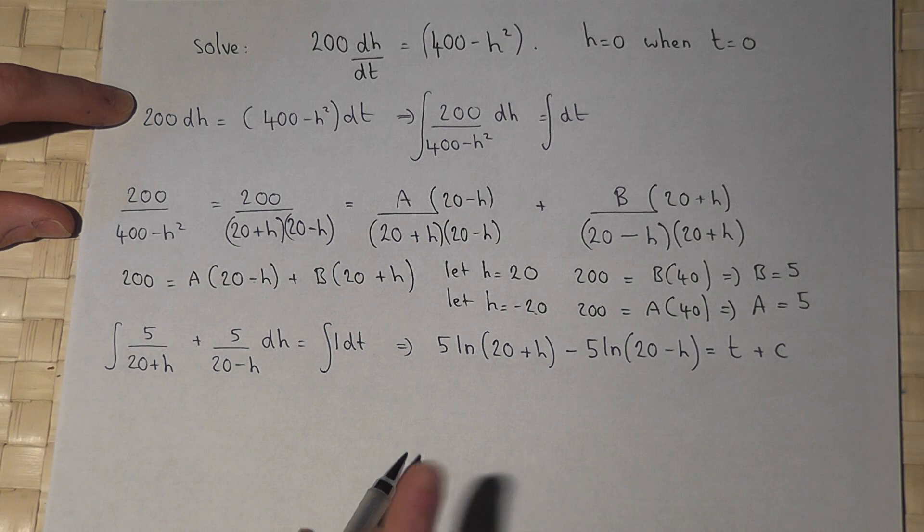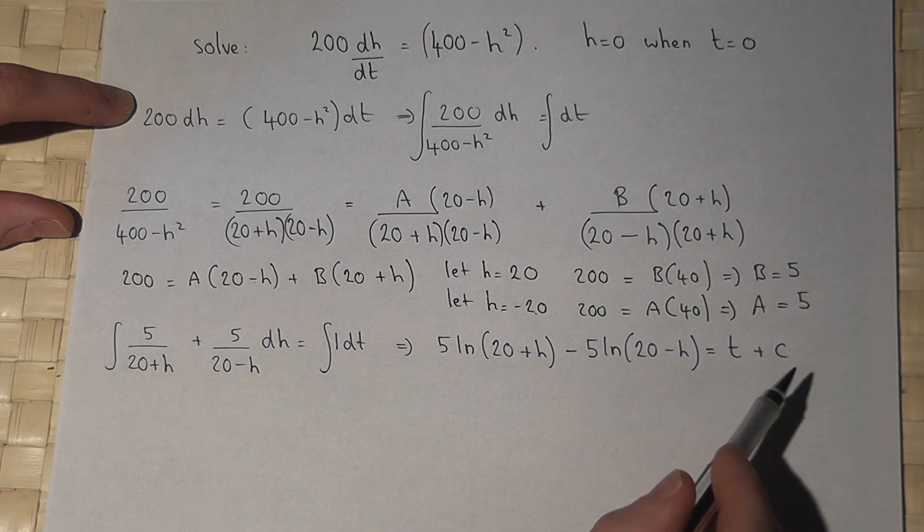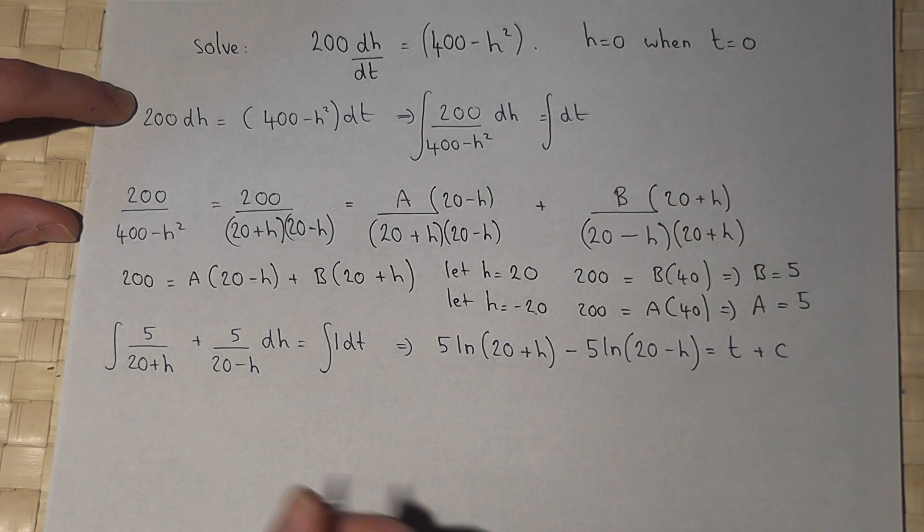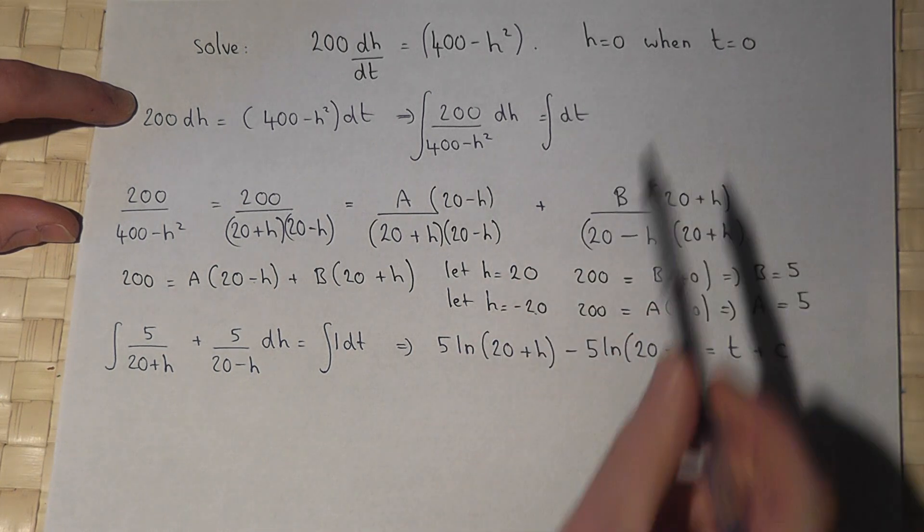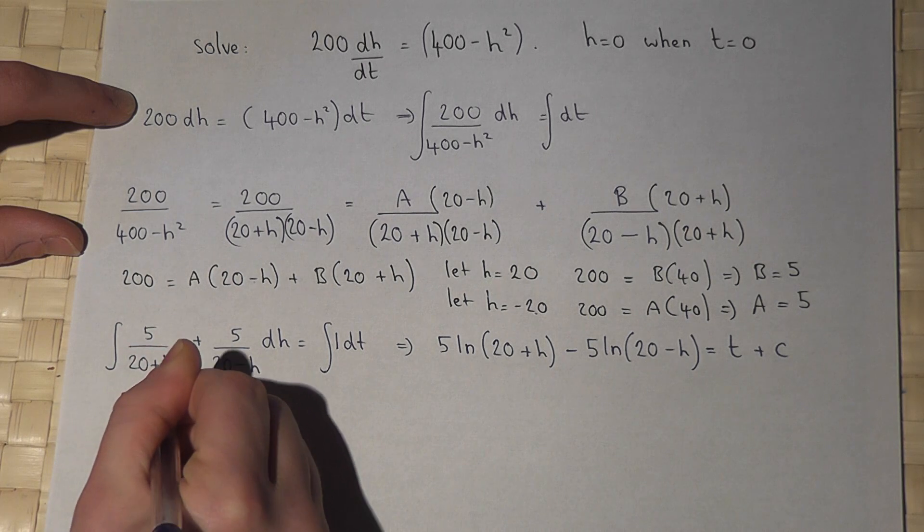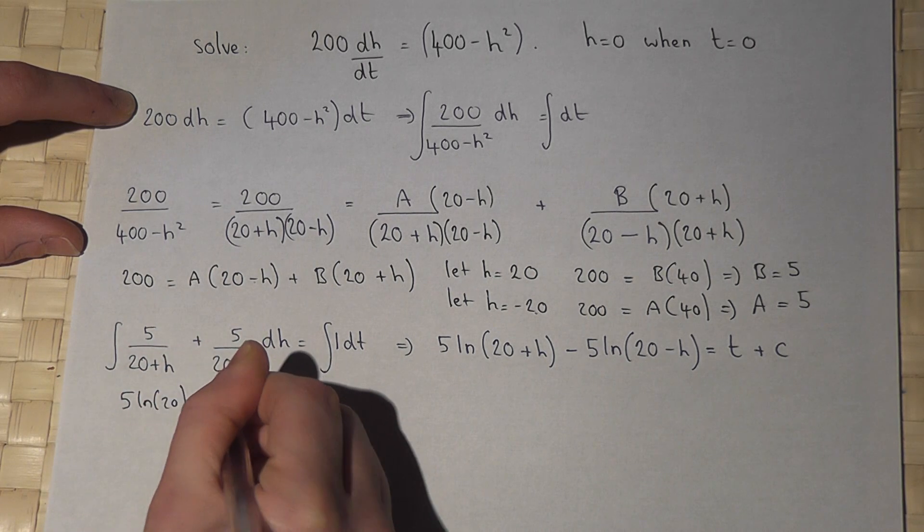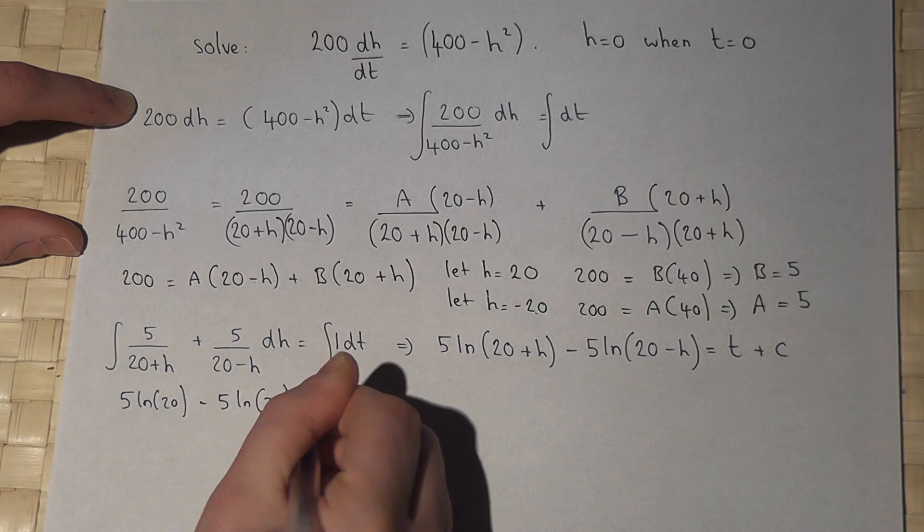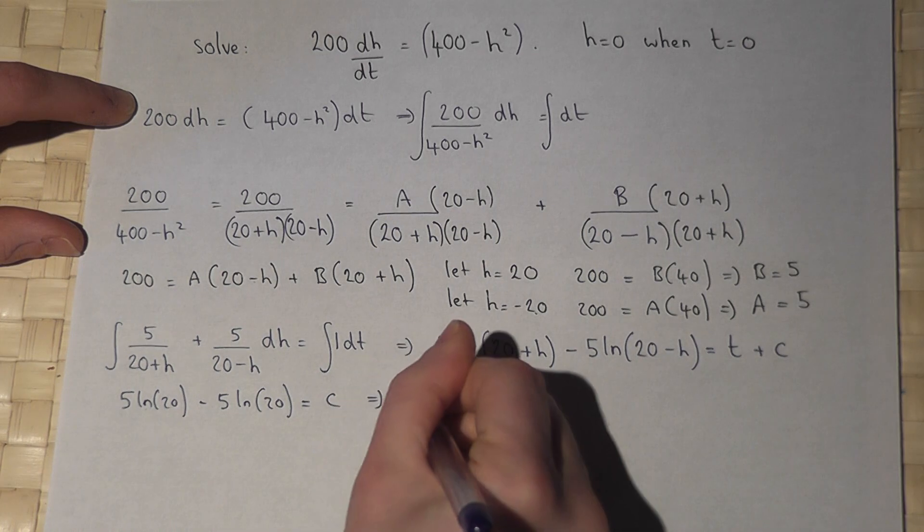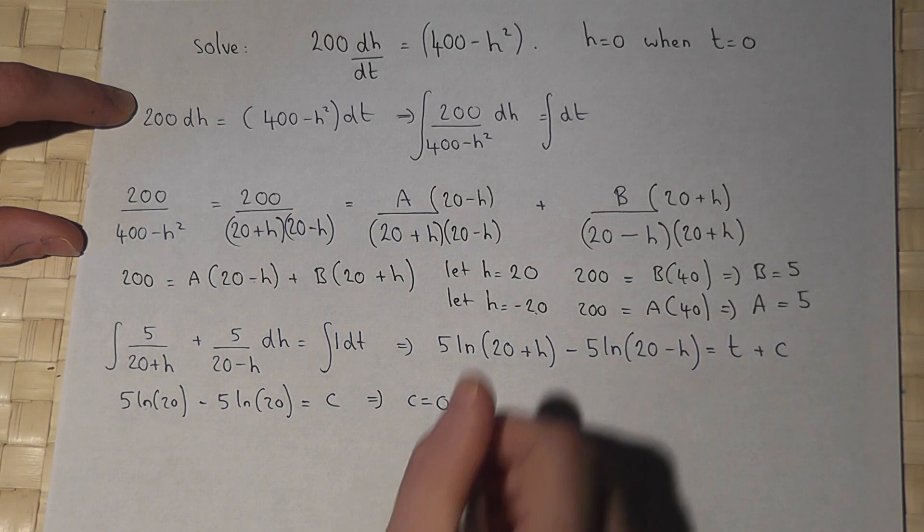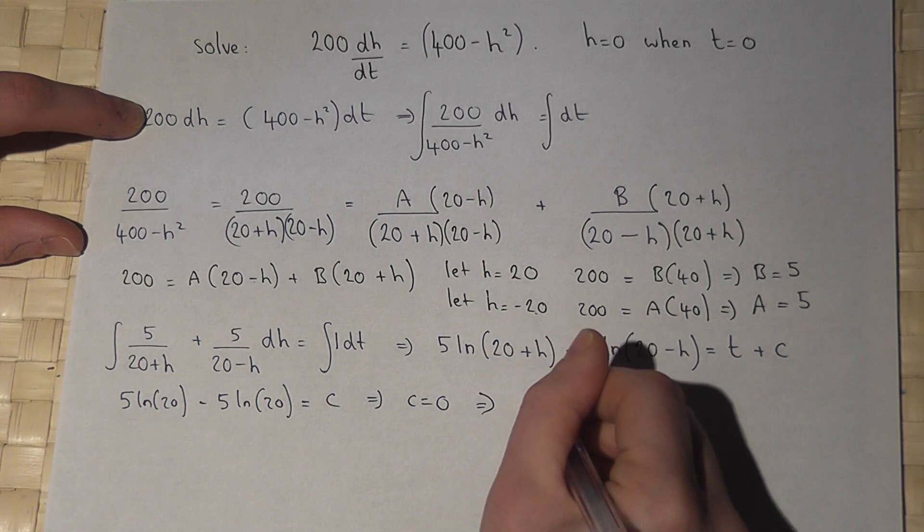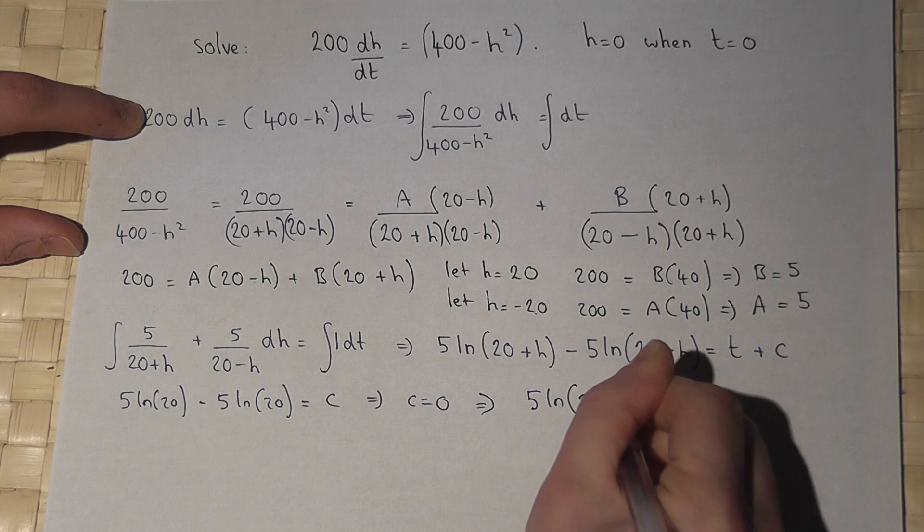We're almost there. I'm going to find out what c is straight away, because I know that when h is 0, t is 0. So if I let h and t equal 0, I get 5 lots of ln 20 take away 5 lots of ln 20 equals c. That equals 0, so therefore c equals 0. So I'm left with 5 ln 20 plus h take away 5 ln 20 minus h equals t.